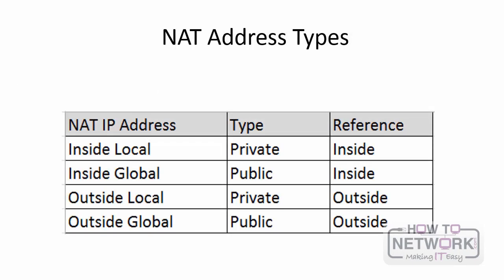The first thing you need to understand when we talk about NAT are the different types of NAT IP addresses. I created this simple chart to help you memorize each of these address types. Inside refers to inside a network, and outside would be outside of your network, such as the internet. Inside local is a private RFC 1918 IP address referencing an inside device. Inside global is a public IP address referencing an inside device. Outside local is a private IP address, and outside global is a public IP address referencing an outside device.